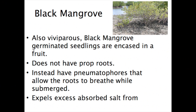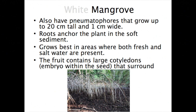The black mangroves also have viviparous propagules with germinated seedlings encased in a fruit. They do not have prop roots, but instead have pneumatophores that allow the roots to breathe while submerged. They also expel excess absorbed salt. The white mangroves have pneumatophores that are a little smaller. Their roots anchor the plant into soft sediment, and they grow best in areas with both fresh and salt water. The fruit contains large embryos.